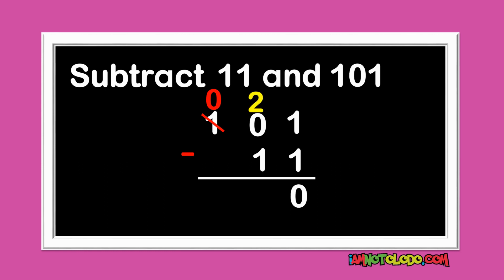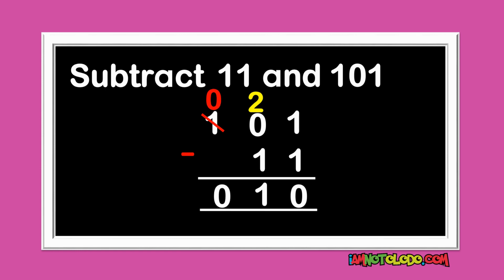So we borrow from this one. This becomes 2. So 2 minus 1 is 1. This one is already 0. So this is your final answer.